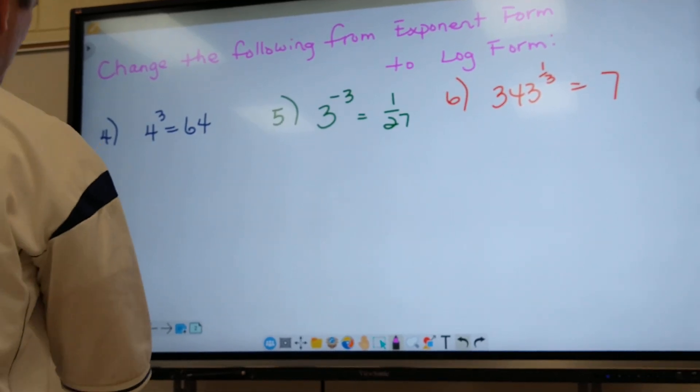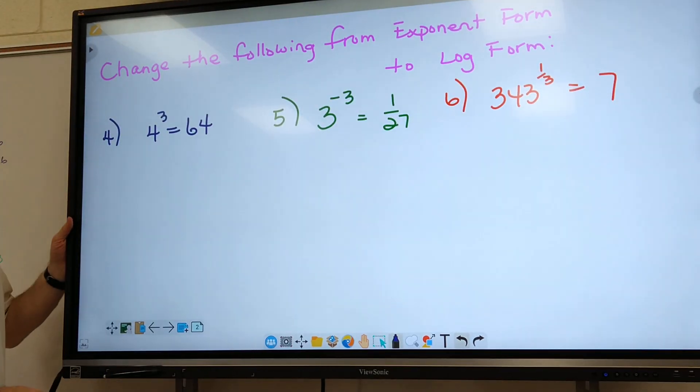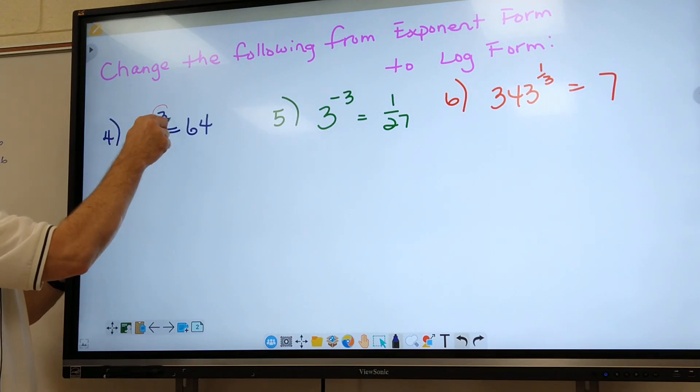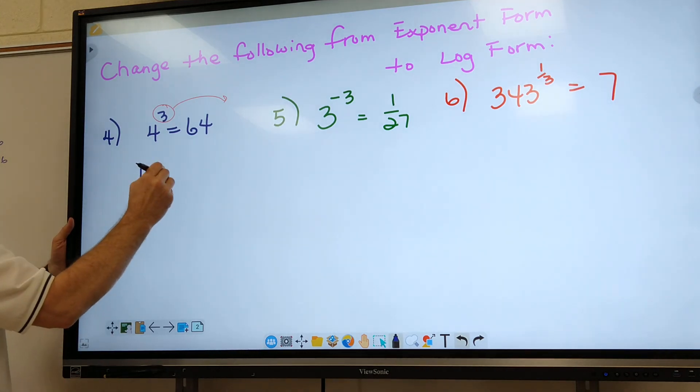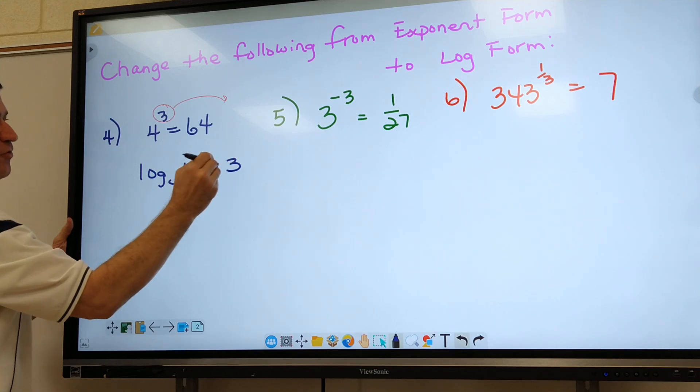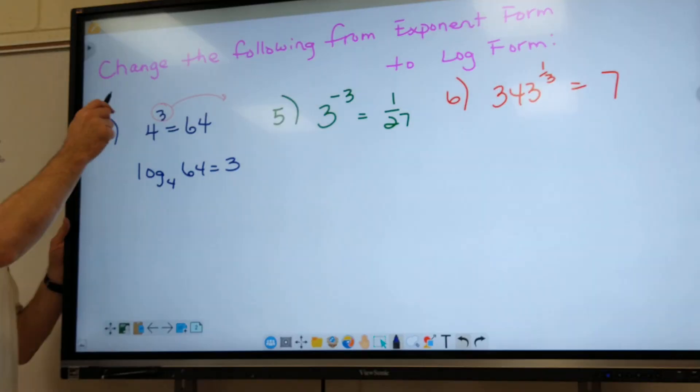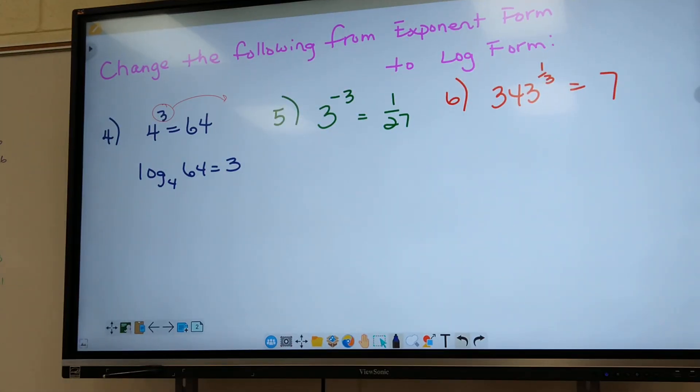All right, so these were just going backwards, right? All right, so watch me on number four. We take this number back over to the right side, so it'd be log base four of 64 equals three. So that's how you go from exponent form back into log form. All right, so you guys do five and six the same way, then we'll do some problems we've got to solve.